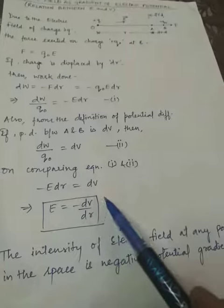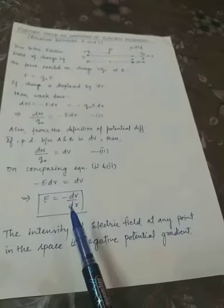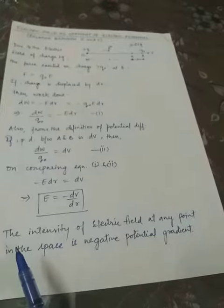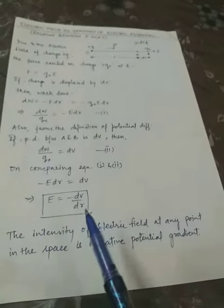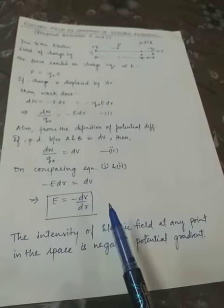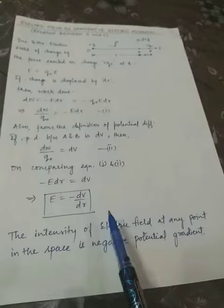This expression shows that the intensity of electric field at any point equals the negative potential gradient. It also means that if we move in the direction of electric field, then electric potential will be decreasing in nature.